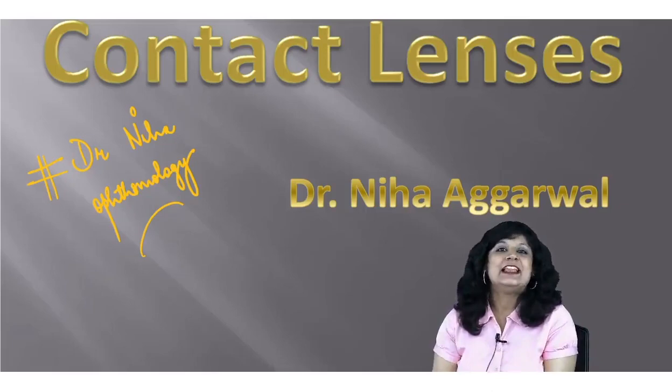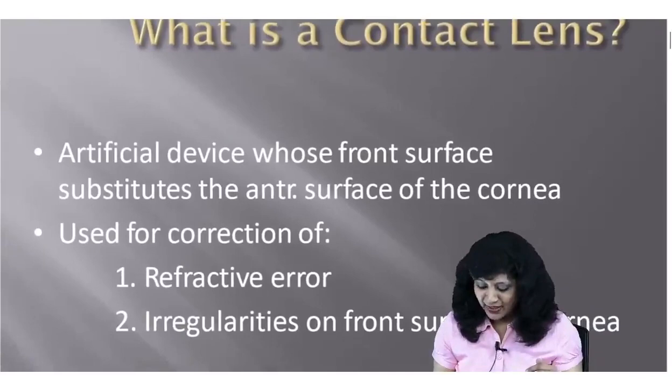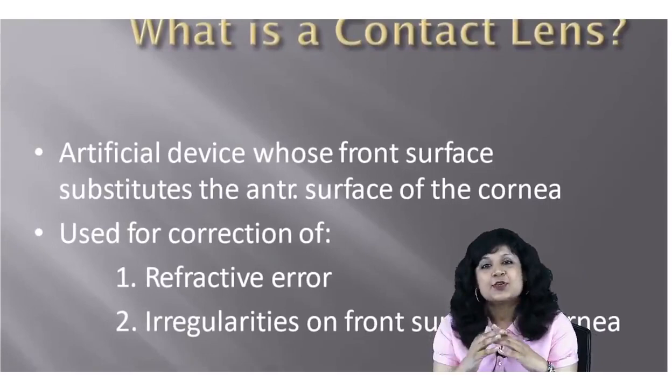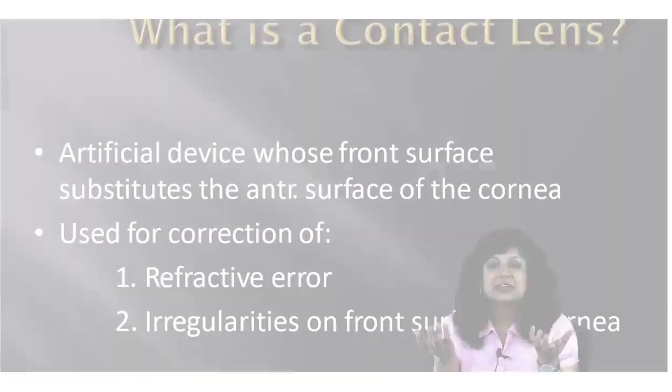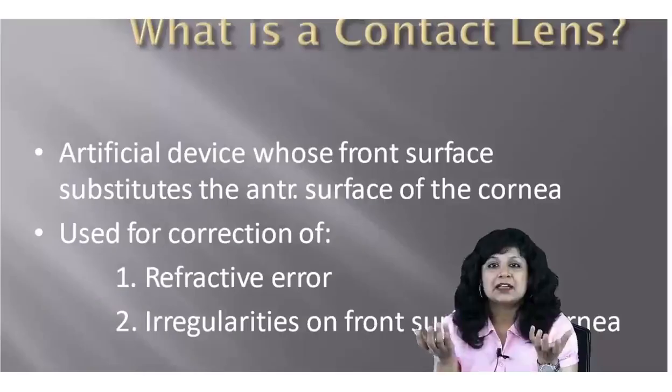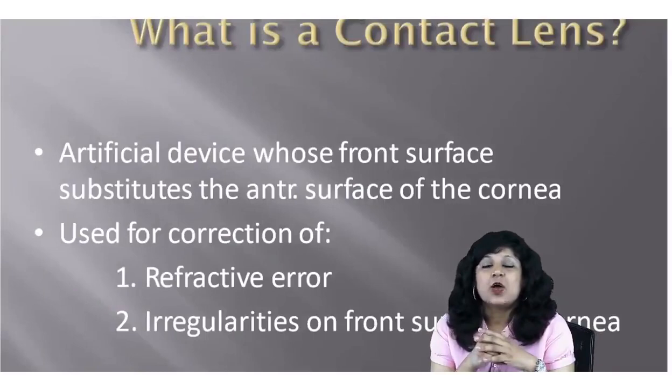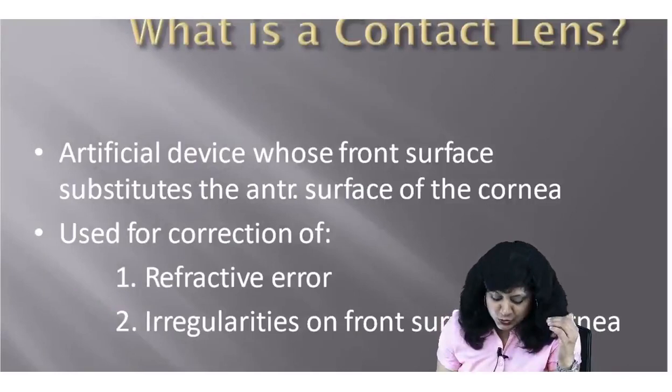First of all, I will start with a very basic fact. What is actually a contact lens? If you split this word — contact and lens — it is a lens which is coming in contact with the cornea. So this is actually an artificial device which is replacing the anterior surface of the cornea.